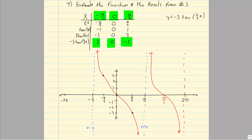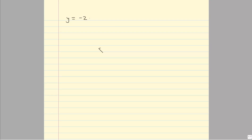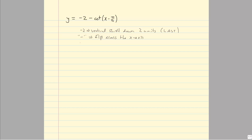These graphs take quite a bit of work, especially tangent, cotangent, secant, and cosecant, but if you break it down into smaller steps it's not too bad. Let's look at another example using cotangent. We'll graph y = −2 − cot(x − π/4). I see three transformations: the negative 2 is a vertical shift down 2 units (always do vertical shifts last), the negative sign in front of cotangent is a flip across the x-axis, and x − π/4 is a phase shift of π/4 units to the right.